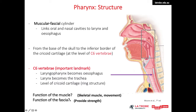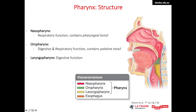The muscles are skeletal, so their main function is movement of food or liquid, and the fascia provides structural strength. The pharynx has three parts: the nasopharynx, oropharynx, and laryngopharynx. The nasopharynx is posterior to the nasal cavity with a main function of respiration. The oropharynx is posterior to the oral cavity and functions mainly in digestion but also respiration. The laryngopharynx is posterior to the larynx. The nasopharynx contains the pharyngeal tonsil and the oropharynx contains the palatine tonsil, which are the first line of immune defense.